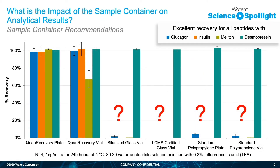Nonspecific binding is a complex phenomenon. Let's take a look at four therapeutic peptides placed into a variety of different sample containers: glucagon, insulin, melatonin, and desmopressin. Glucagon and melatonin are both very hydrophobic, insulin is on the larger side, and desmopressin is fairly easy to separate and quantify. We've placed them into the Quan Recovery plates and vials, various glass vials, and various polypropylene plates and vials.